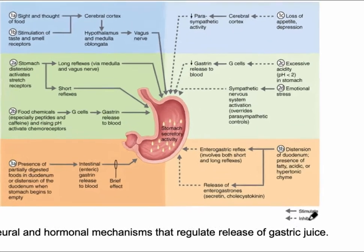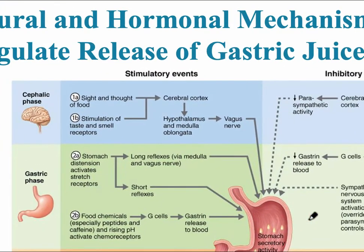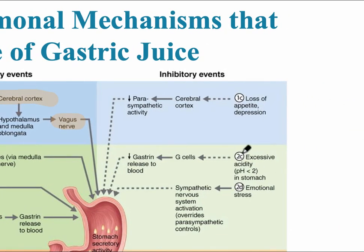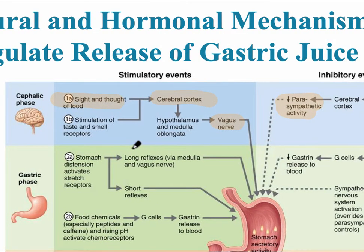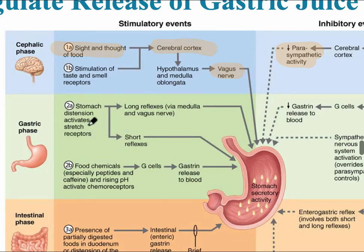Looking at the chart, at the top we see the cephalic phase first. The stimulatory events are thinking about food and the sight and smell of food — notice it activates the parasympathetic nerve, which is the vagus nerve. Inhibitory effects are the opposite: loss of appetite, depression, decreased parasympathetic activity, or increased sympathetic activity. In the gastric phase, stimulatory effects include stretching and distension of the stomach, which activates short- and long-term reflexes, and food chemicals that can activate gastrin release directly into the blood from the G cells.